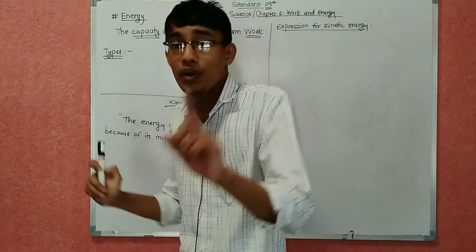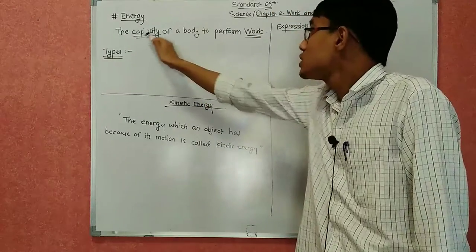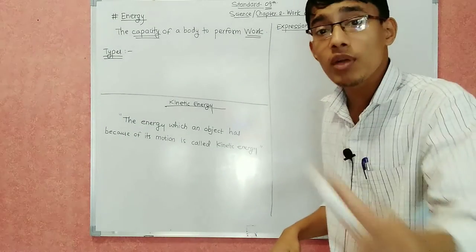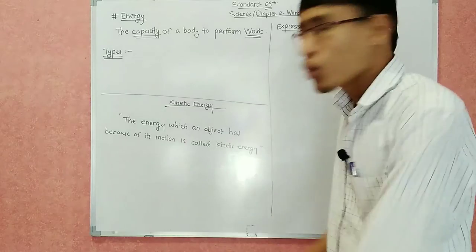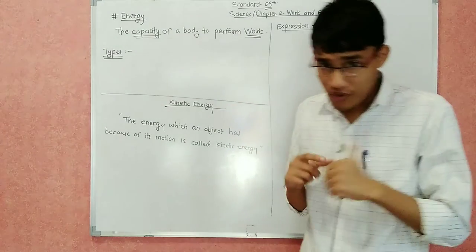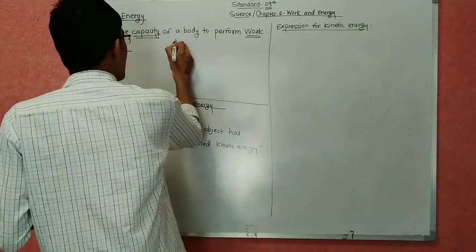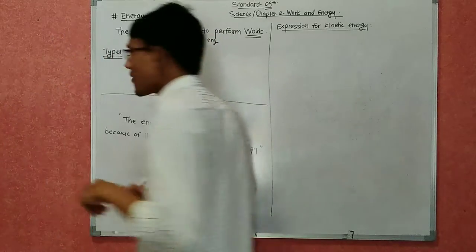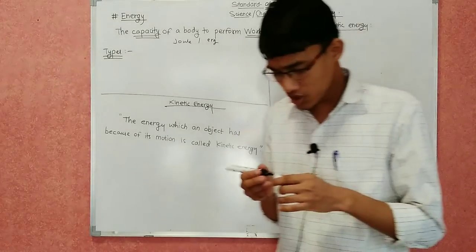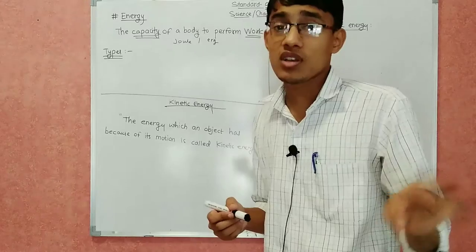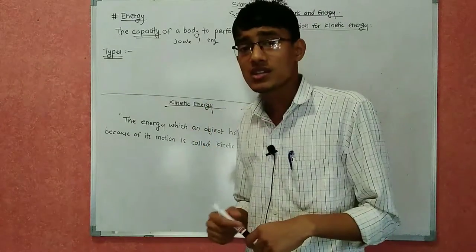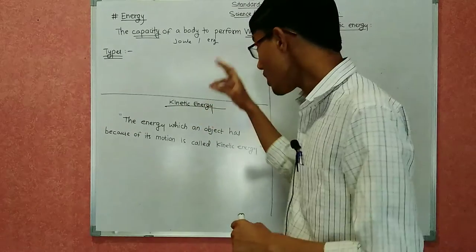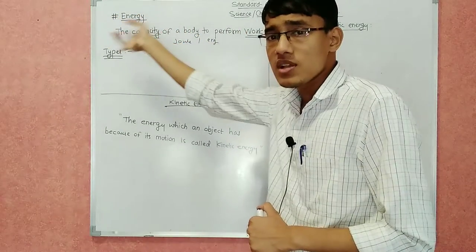So, how is energy defined? Energy is defined as the capacity of a body to perform work. The SI unit of energy is Joule, and the CGS unit is erg. We have studied about these units in the previous lecture. The units of energy and work are the same — SI unit is Joule and CGS unit is erg.